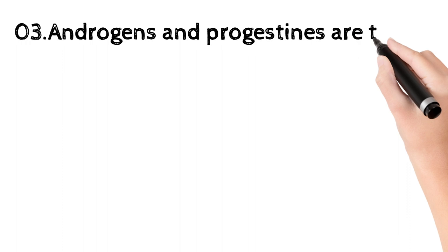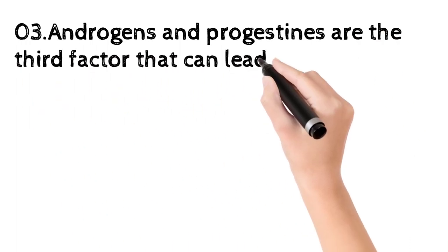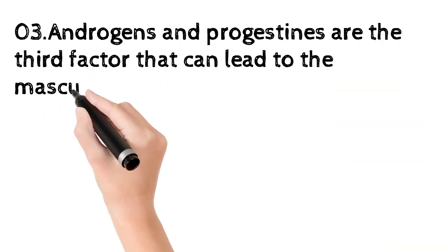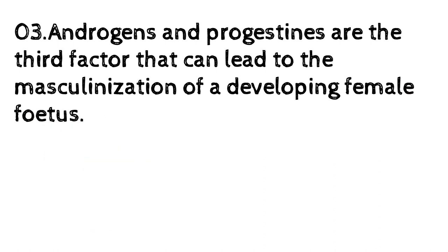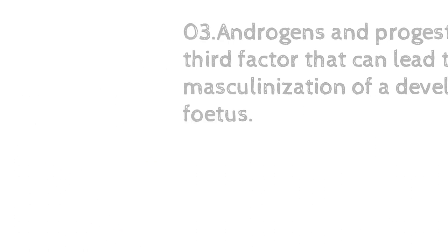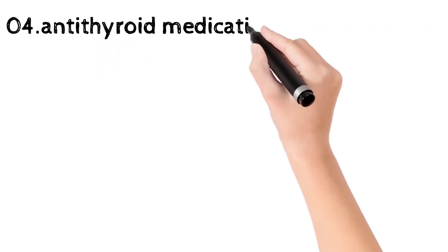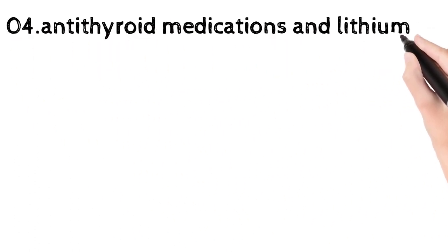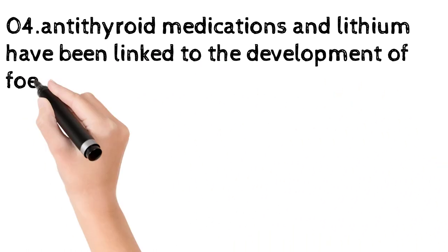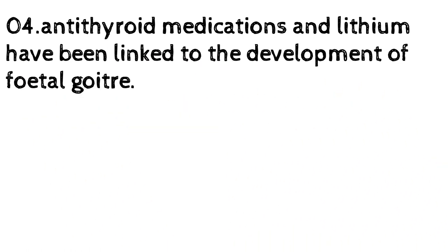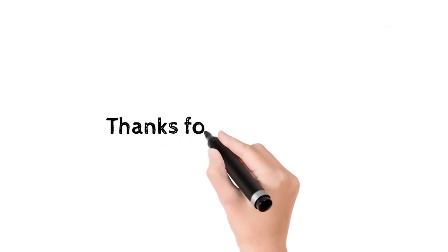Androgens and progestins are the third factor, which can lead to the masculinization of a developing female foetus. Four, antithyroid medications and lithium have been linked to the development of fetal goiter. We appreciate you taking the time to watch the video.